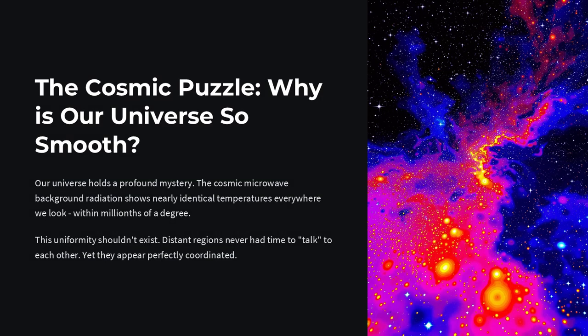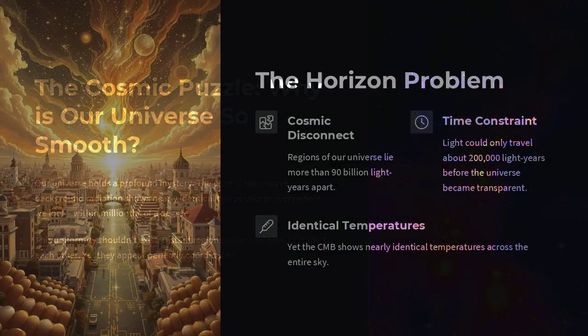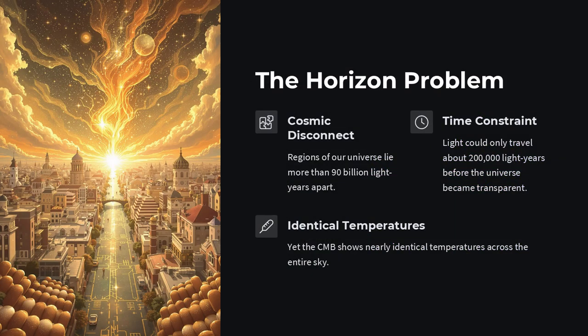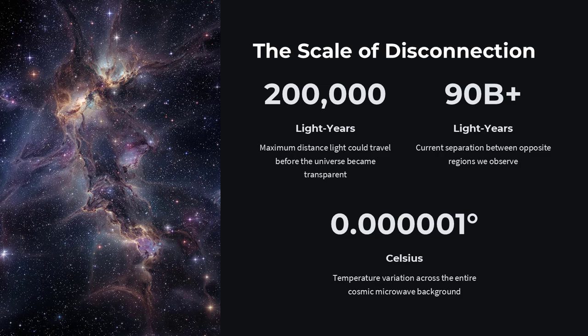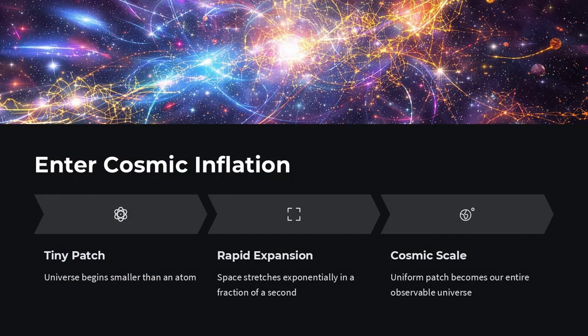Imagine gazing up at the night sky and finding that no matter which direction you peer, the glow of the cosmic microwave background, CMB, is almost exactly the same temperature within a few millionths of a degree. That uniform glow is surprising because the universe's patches separated by vast distances never had time to swap information or even things out before sending their light our way. So why is the cosmos so smooth?